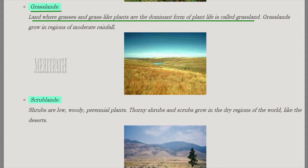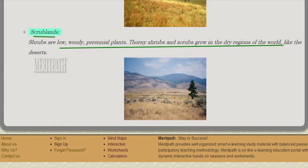The next type of natural vegetation is grassland — a land where grasses and grass-like plants are the dominant form of plant life. Grasslands grow in regions that receive a moderate amount of rainfall. Next is shrublands, where low woody perennial plants called shrubs grow, including thorny shrubs, mostly in dry regions of the world like deserts.